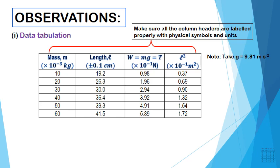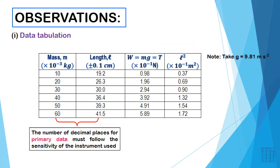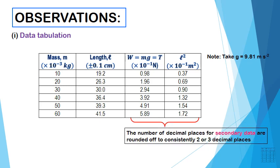Observations, Roman 1: data tabulation. Record the readings measured in a suitable table. Make sure all the column headers are labelled properly with physical symbols and units. Don't forget to include the sensitivity of the measuring tool used to measure the length L in the column header. The number of decimal places for primary data recorded must follow the sensitivity of the instrument used.